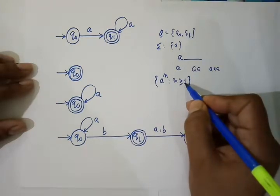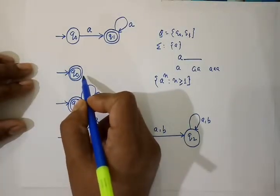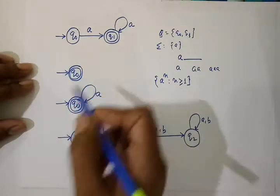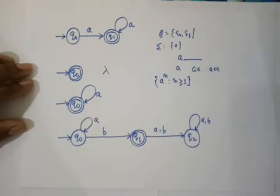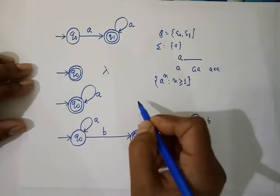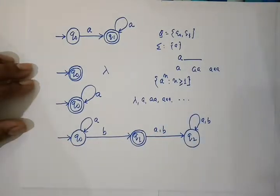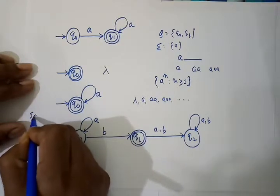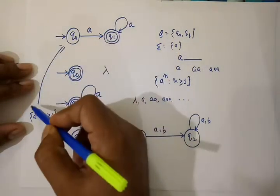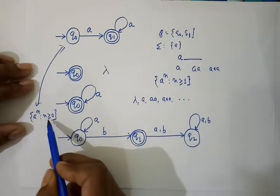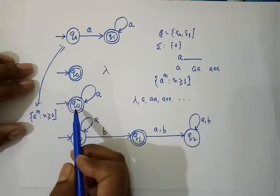We cannot put 0 here because if we put 0 it would also accept null. In the next example, this DFA will accept just null only, because the final state and start state are the same. In another case, it can accept null, A, or any combination of A's. The language accepted by this DFA is A to the power N such that N is greater than or equal to 0. Notice the difference: in the previous case N is greater than or equal to 1, in this case N is greater than or equal to 0, so null is also accepted.